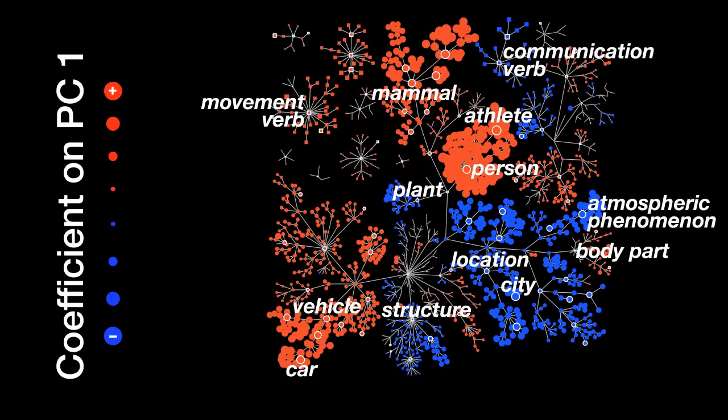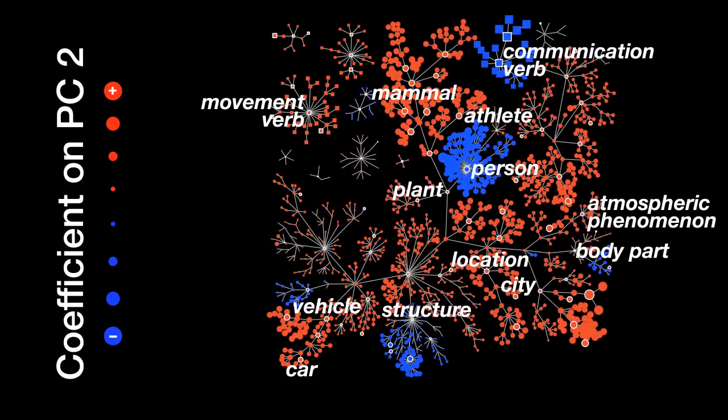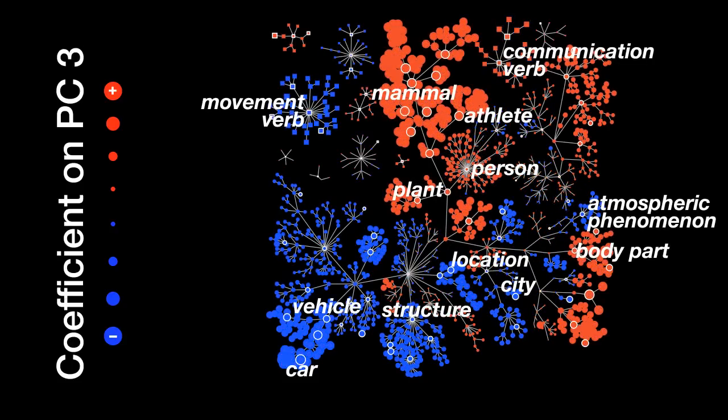The next three dimensions distinguish categories associated with people, categories associated with civilization, and biological categories.